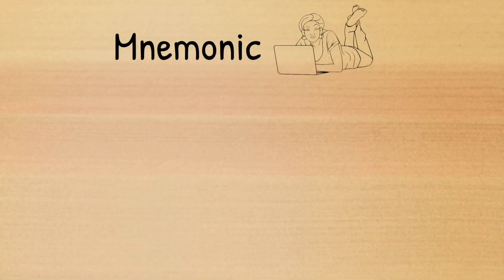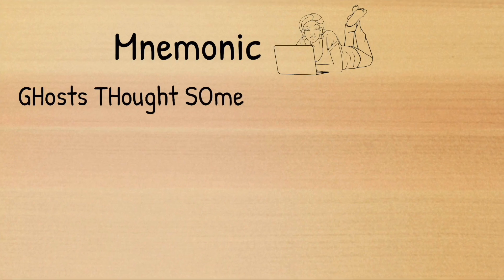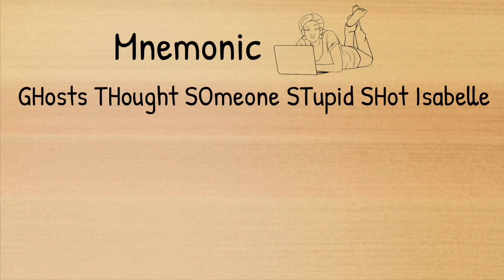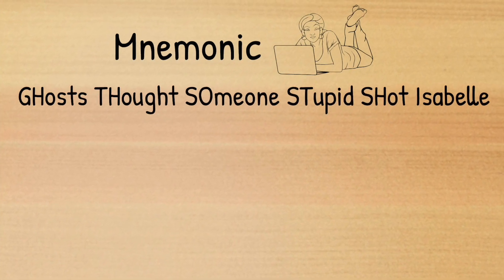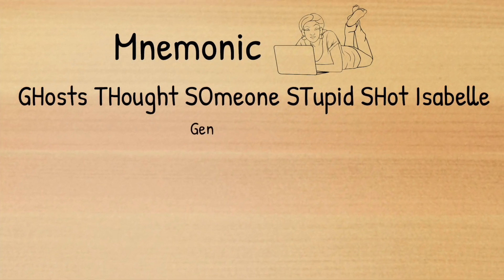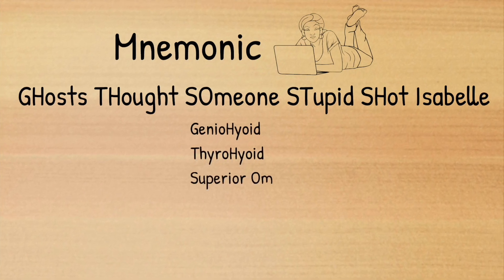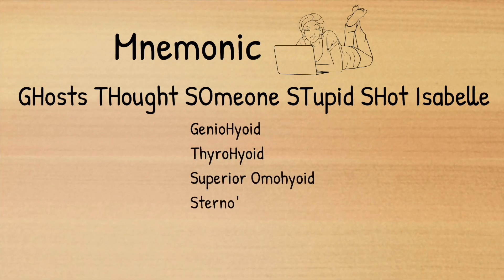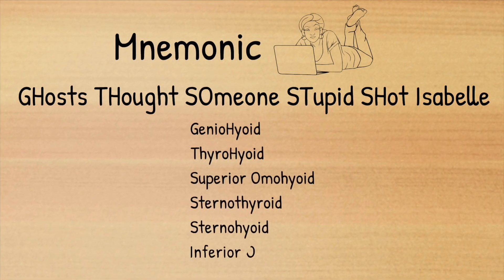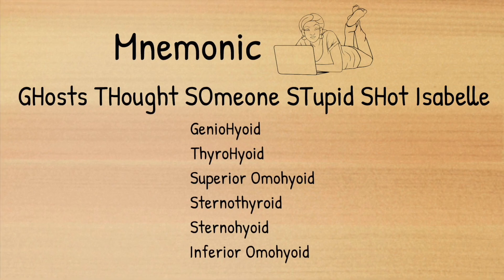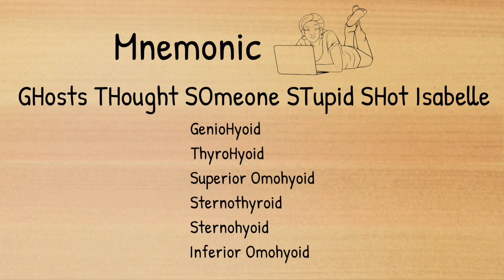Now it wouldn't be a Saltén Brain Hub video if we didn't give you a handy mnemonic to help you remember all of these muscles. So get your pens poised and scribble down: 'Ghosts thought someone stupid shot Isabel' — which stands for Geniohyoid, Thyrohyoid, Superior Omohyoid, Sternothyroid, Sternohyoid, and Inferior Omohyoid — all the muscles innervated by Ansa Cervicalis going from the superior root to the inferior root.